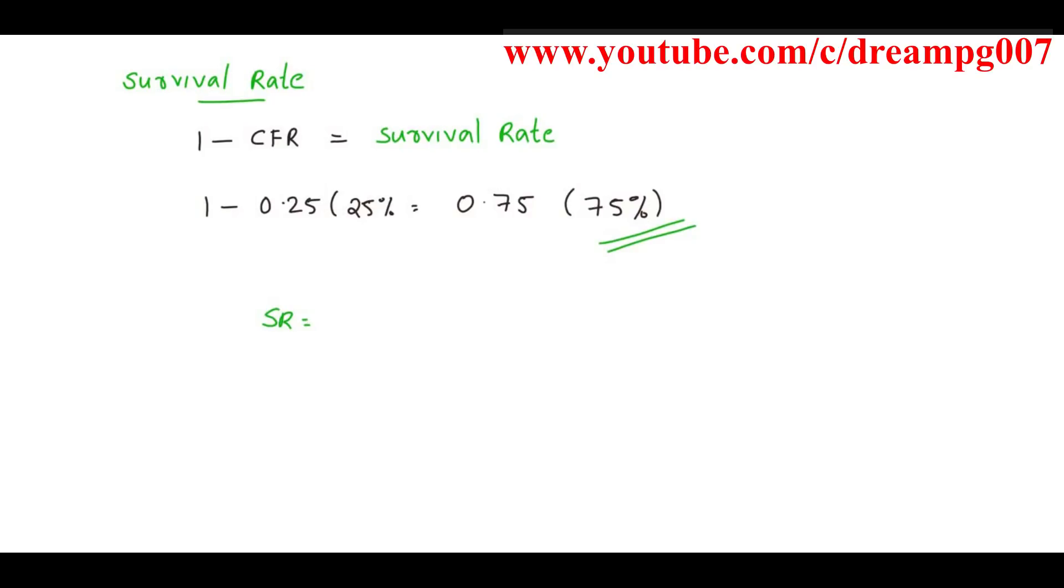Survival rate is calculated by the formula: number of people alive after five years of the disease divided by number of cases times 100. Survival rate is the yardstick which measures the standard of treatment given in the community.